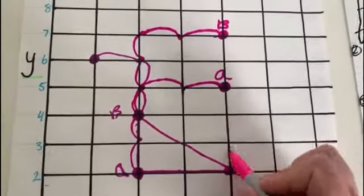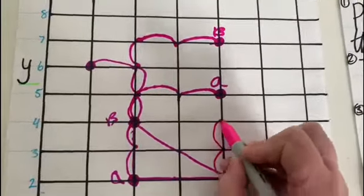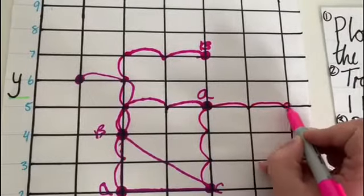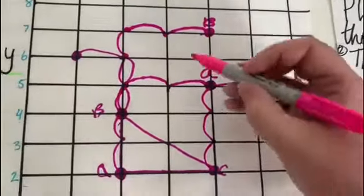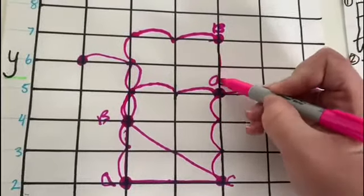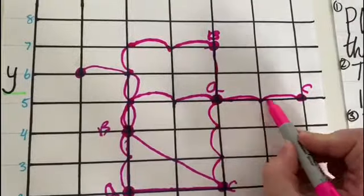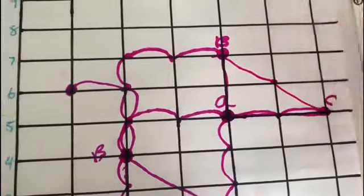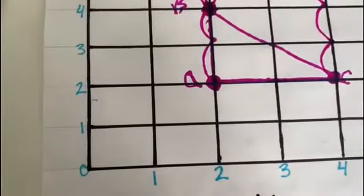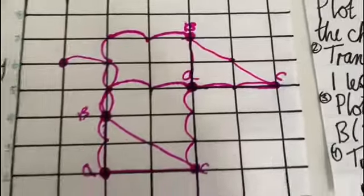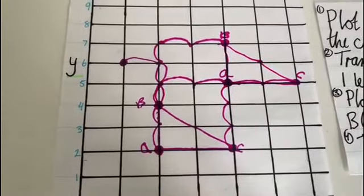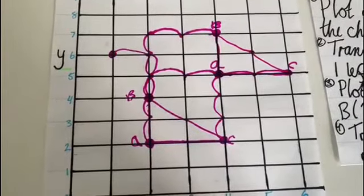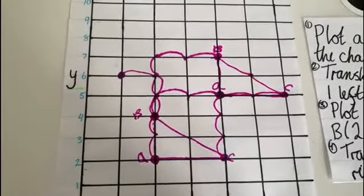And the same for point C. I will go up 1, 2, 3, and right 1, 2. And that is the new coordinate for point C. If I trace this shape I should see that the shape has not changed from the original to the translation. So remember when you're translating a shape you have to move each point the same number of places and the shape should stay the same from the original to the translation.